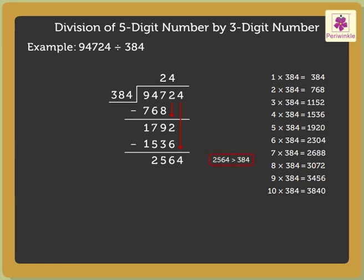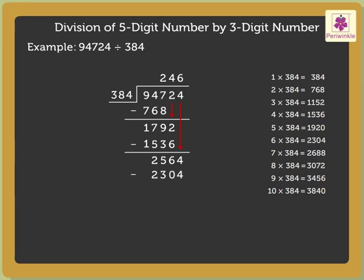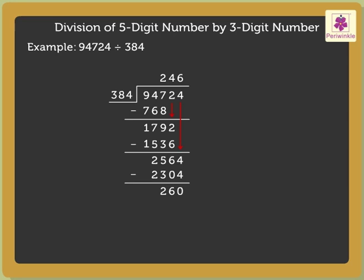Here, 2564 is greater than 384, so we can divide further. The nearest multiple we get is 2304. As 384 into 6 is equal to 2304, we write 6 in the quotient above the 4. Next, subtract 2304 from 2564, which is equal to 260. Now, as there are no more digits to bring down, we have finished our division. Therefore, the quotient is 246 and the remainder here is 260.